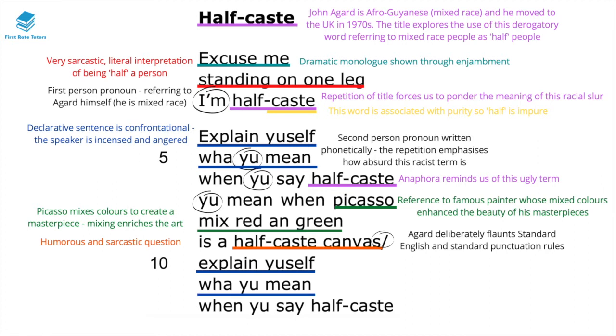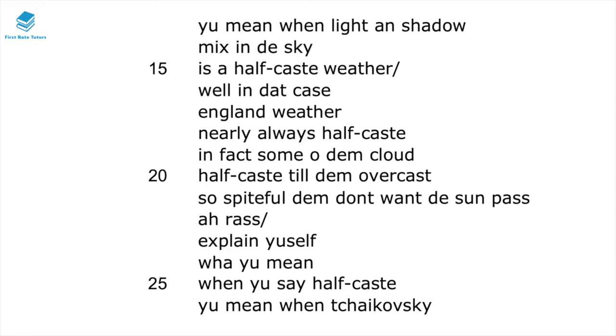In line 10, he states 'explain yourself,' and in line 11, 'what you mean' — again a repetition and reference back to lines 4 and 5. This repetition of the declarative sentence shows the speaker's anger.